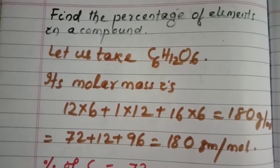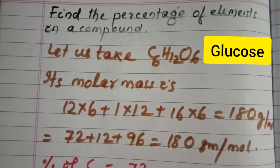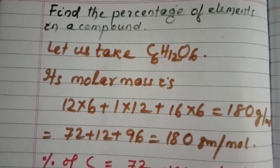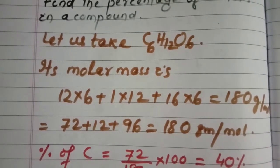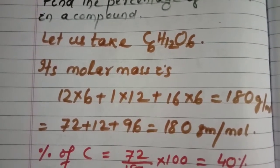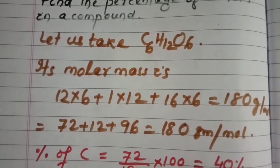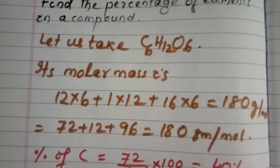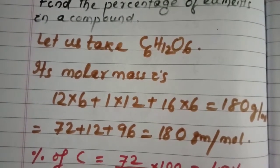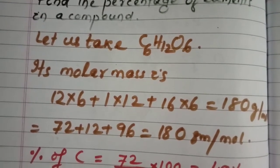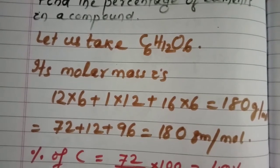Find the percentage of different elements in the compound given below: C6H12O6, that is glucose. Its molar mass is 12 × 6 plus 1 × 12 plus 16 × 6, which is equal to 180 grams per mole. Here 12 is the atomic mass of carbon, 1 is the atomic mass of hydrogen, and 16 is the atomic mass of oxygen. Note that the exact atomic mass of hydrogen is 1.08, but here it is taken as 1.